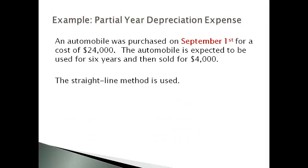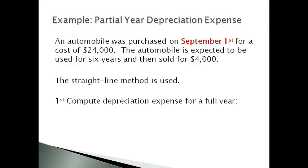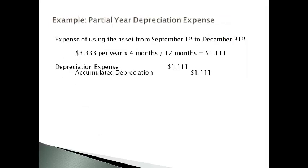Long-term assets purchased in the middle of the year must be expensed for the part of the year the asset was used. For example, an automobile purchased so that it was used for four months — from September 1st through December 31st — must be expensed in the year it was purchased. The expense is the full-year amount of $3,333 multiplied by 4 months out of 12 months, giving an estimated cost of using the asset for four months of $1,111.